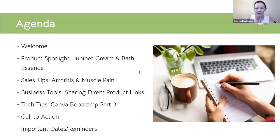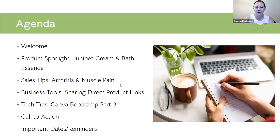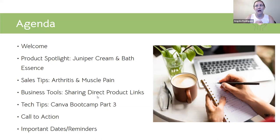We'll cover juniper cream and juniper bath essence for people who struggle with muscular pain and joint pain, and how to use those in different ways. Our sales tips will focus on how to reach people suffering from arthritis and muscle pain — understanding who our ideal audience is. For business tools, we'll talk about sharing direct product links to different social media platforms.